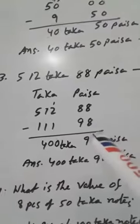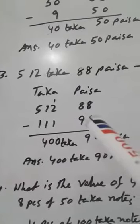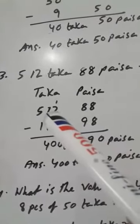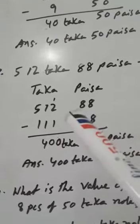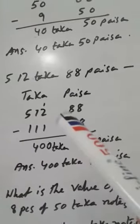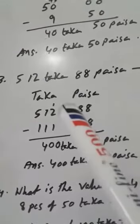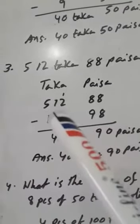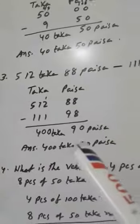88 minus 98: from 8 we cannot subtract 9, so take one loan from the next column. Here it becomes 1; now bring 1 here, making it 18. 18 minus 9 equals 9. Then 1 minus 1 equals 0, 1 minus 1 equals 0, 5 minus 1 equals 4. The answer is 400 taka 90 paisha.